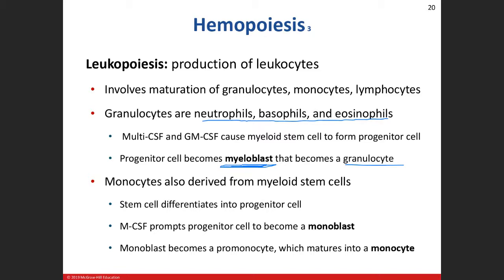If we produce the M-colony stimulating factor, then our progenitor cell is going to differentiate into the monocyte line and will become a monoblast, then goes through a series of steps and eventually into a monocyte.